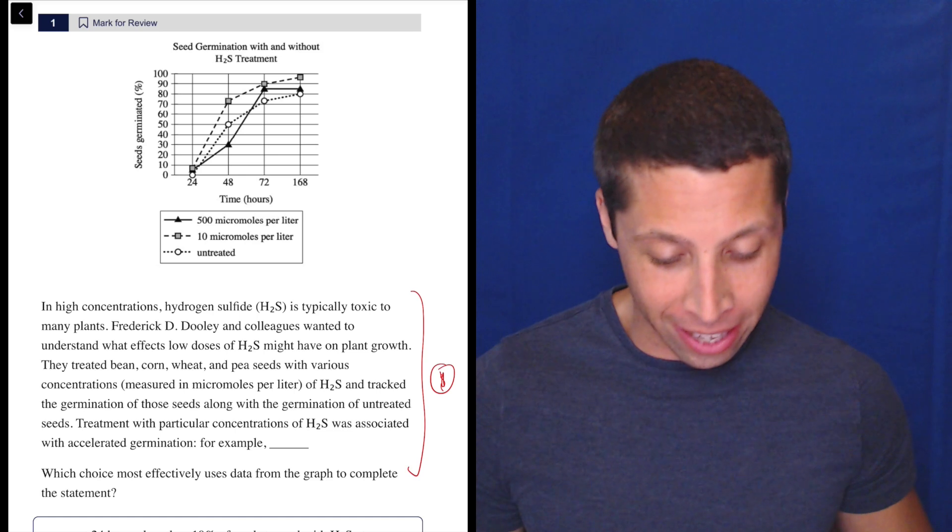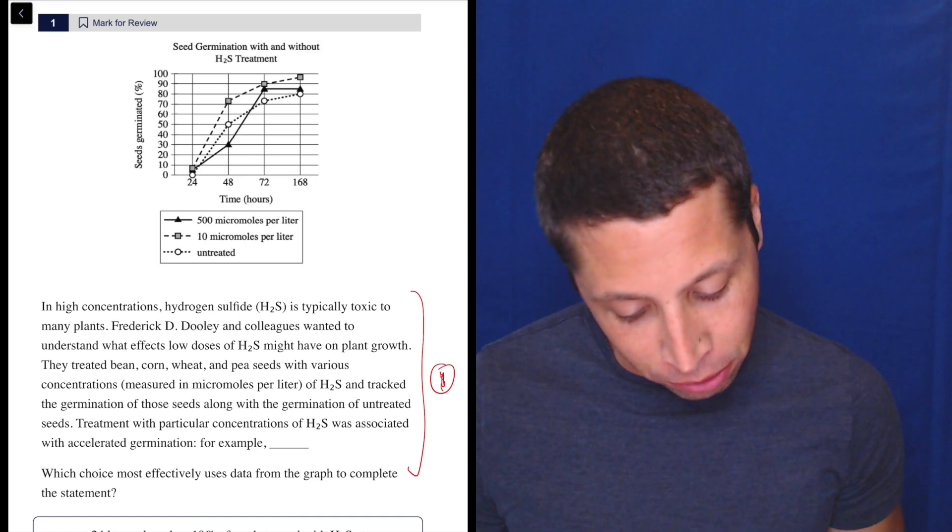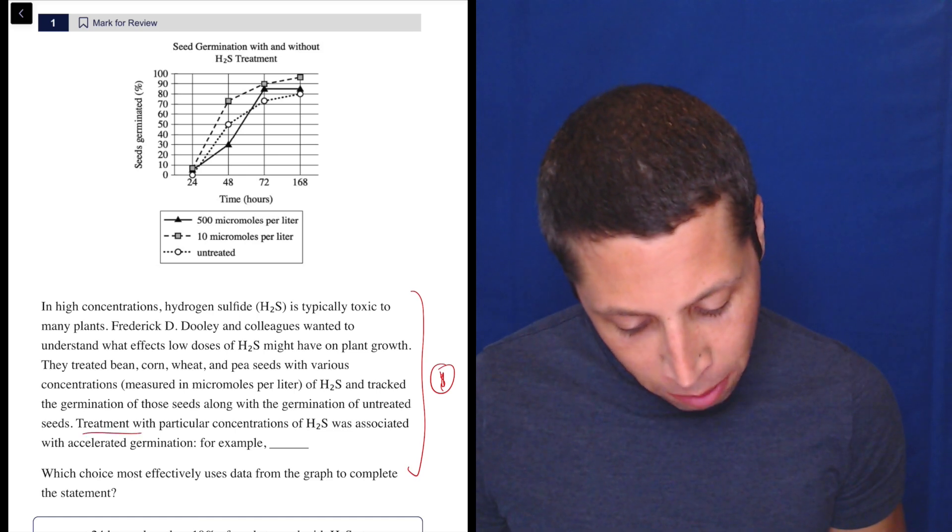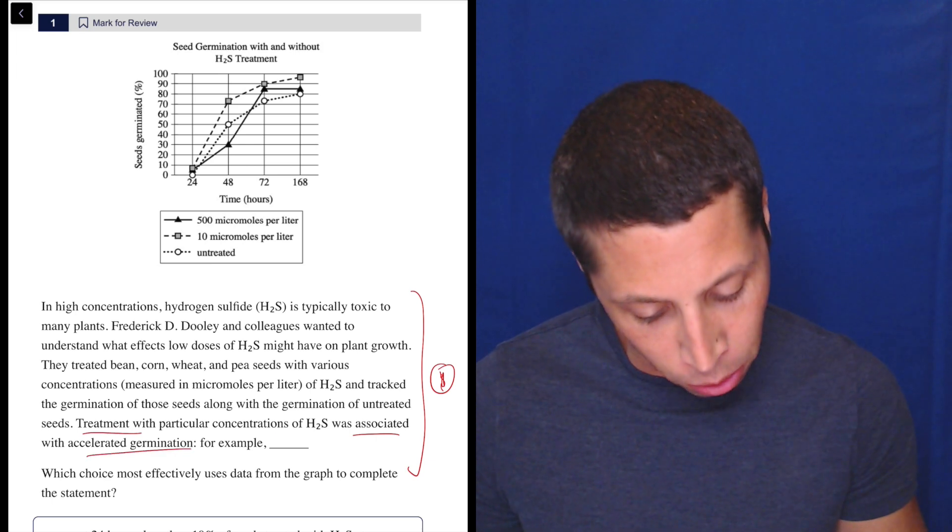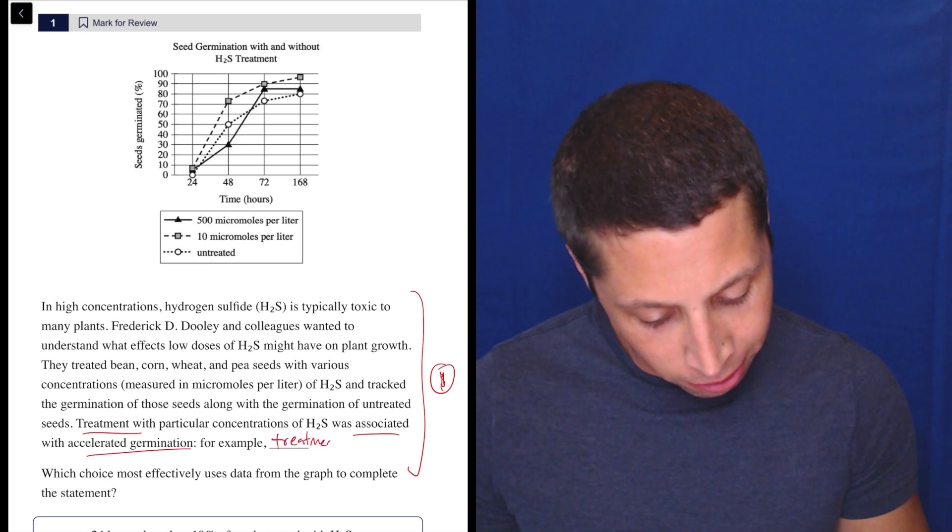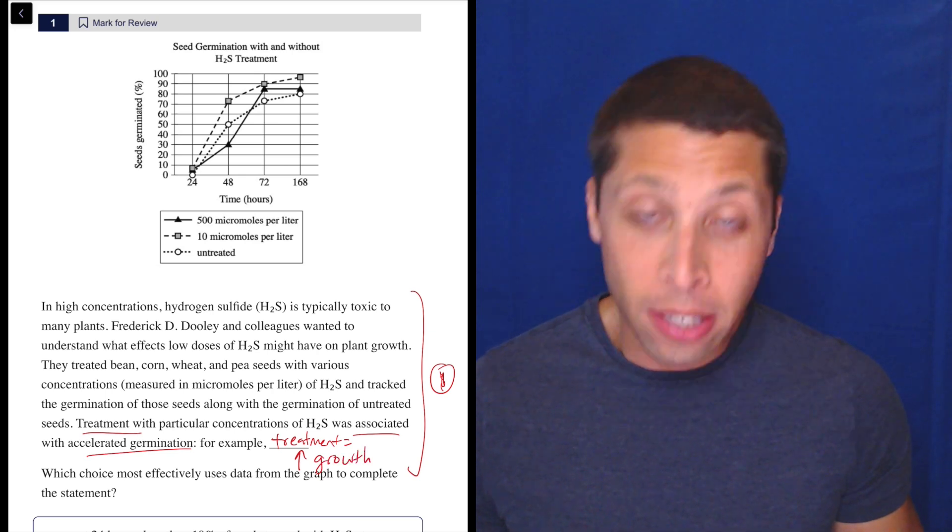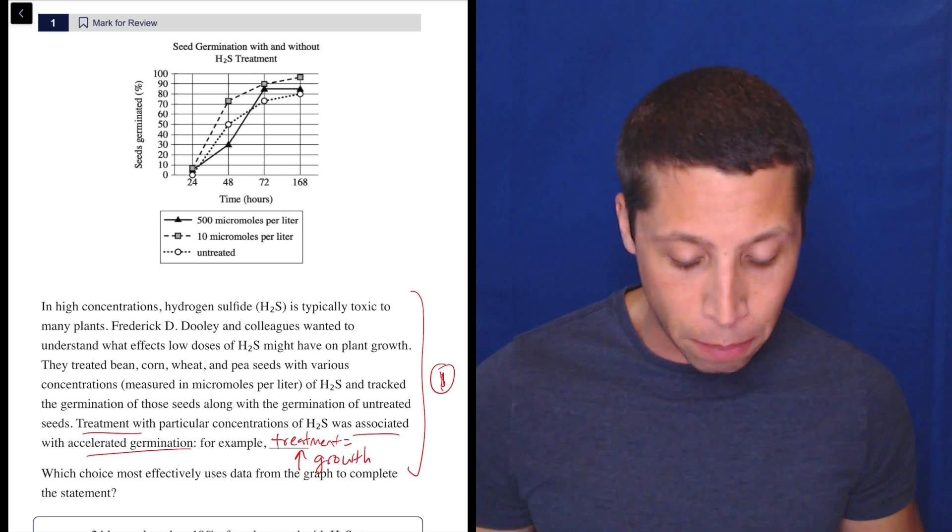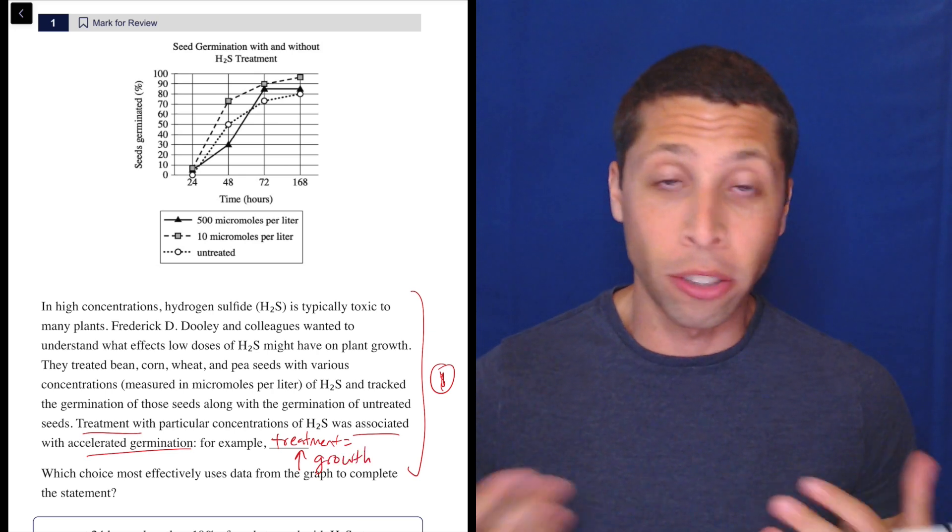So the thing I take away from this, and I know I just said you can't draw on it, but I'm going to do that for simplicity's sake. So treatment is associated with accelerated germination. So treatment equals higher growth. Something like that. I'm not really doing anything except rephrasing that statement, but you might want to write that on your page on your scratch paper.